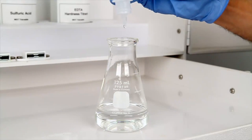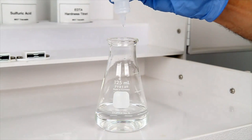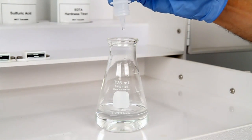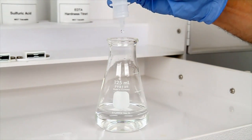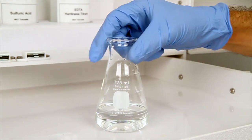The next step is to add 30 drops of hardness buffer. Hold the bottle vertically to get a consistent drop size. After the addition of the reagent, swirl to mix.